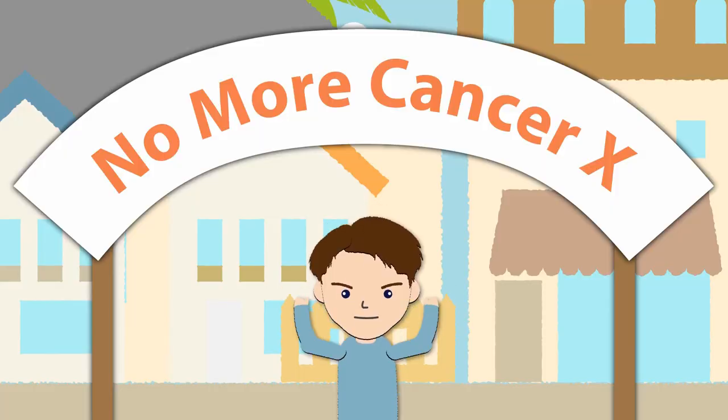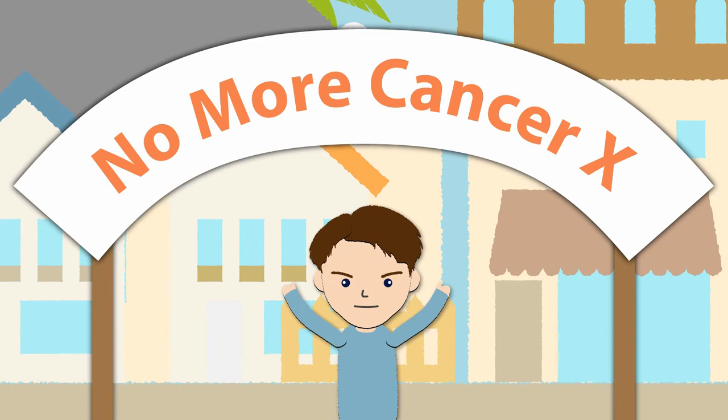Isamu lost no time in calling on all the islanders to tackle the problem together and lowering the death rate of Cancer X to almost zero. Seeing this, cancer specialists scornfully laughed behind Isamu's back.